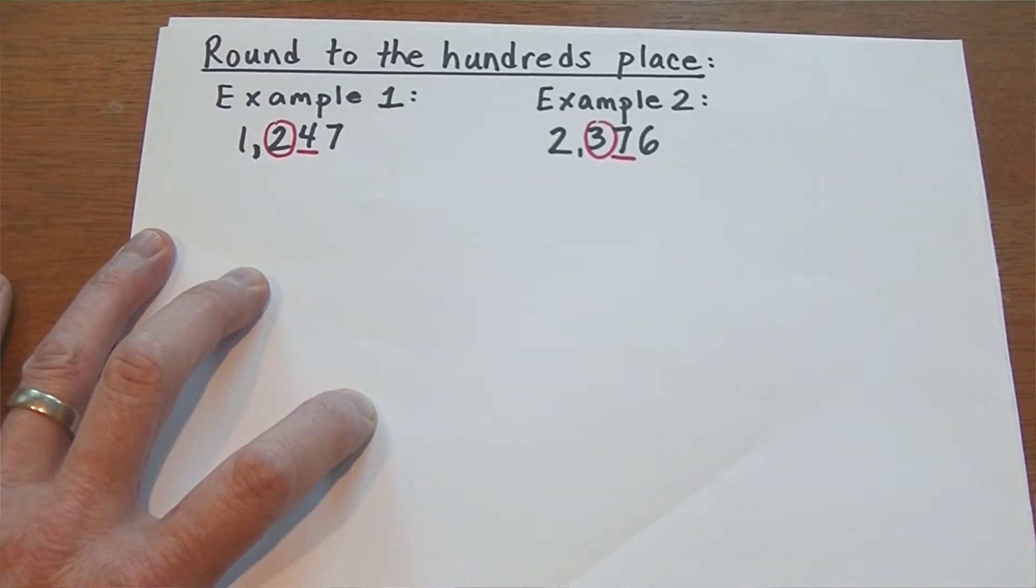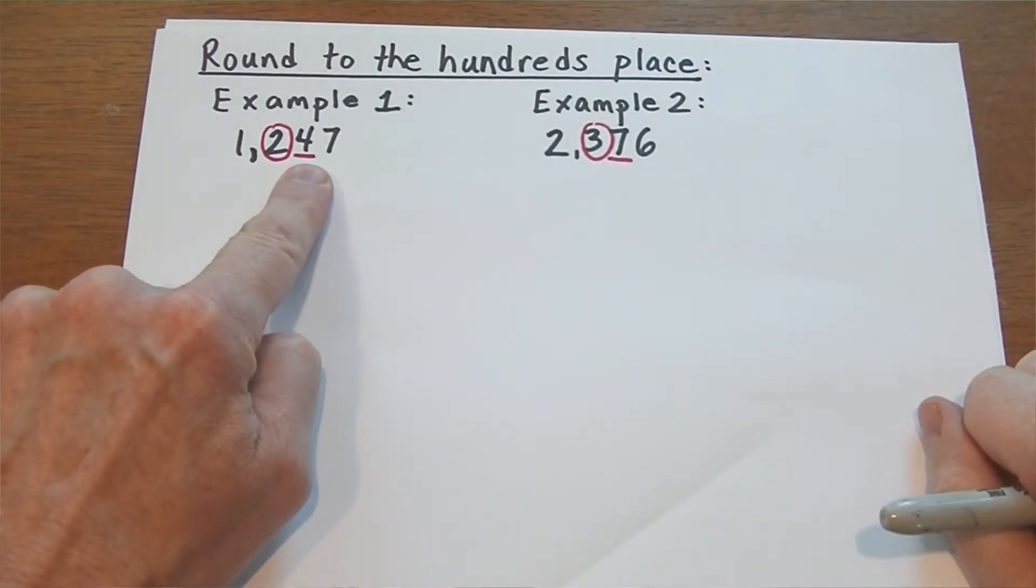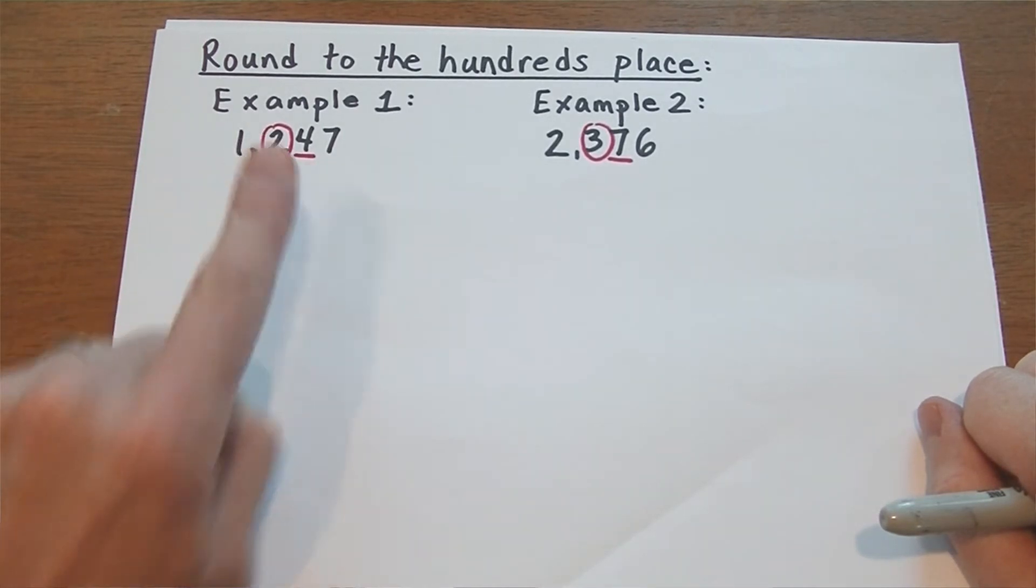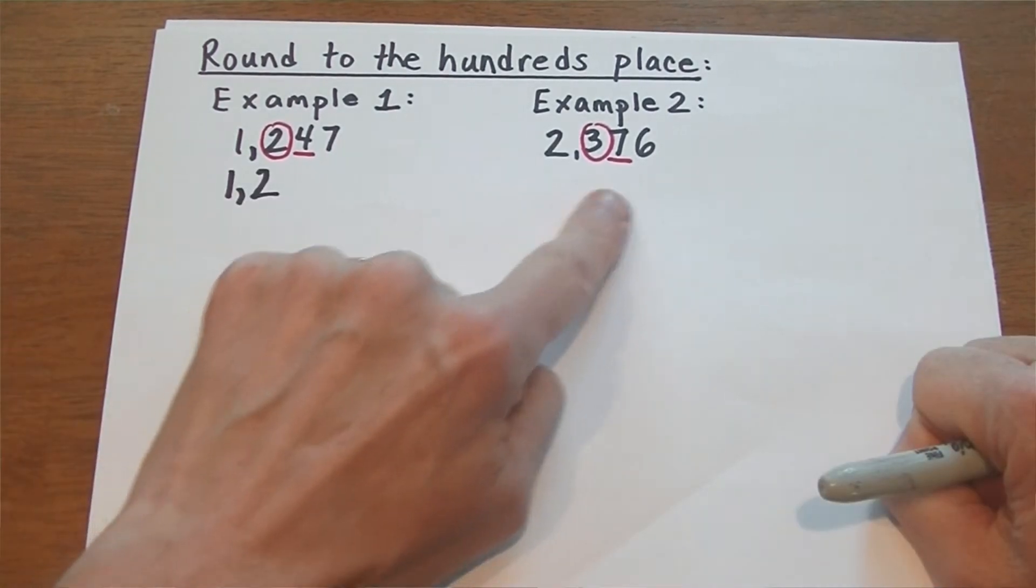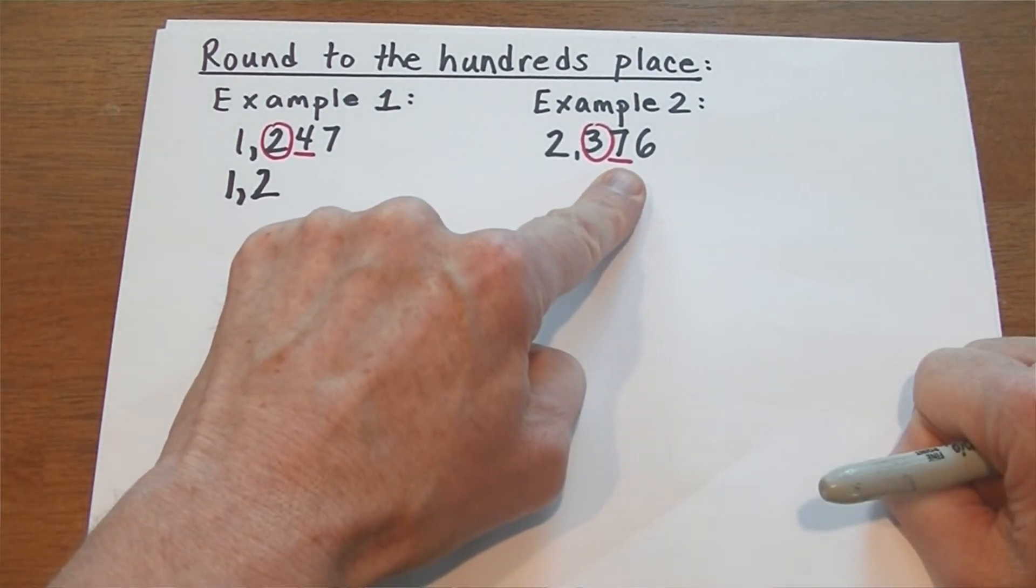If the number underlined is zero, one, two, three, or four, the circled number doesn't change of that you can be sure. If the number that you underlined is five, six, seven, eight, nine, add one to the circled number and you're doing fine.